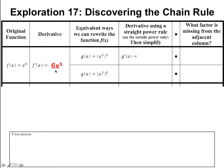Both of these are composite expressions. For x squared cubed, the inside function is x squared and the outside function is something cubed. We're going to start by taking the derivative using a straight power rule on the outside power only — bring the 3 down, rewrite x squared unchanged, and reduce the power to 2. That gives us 3 times x squared squared, which simplifies to 3x to the fourth. But that is not 6x to the 5th, so just doing the power rule on the outside isn't getting us the correct derivative.